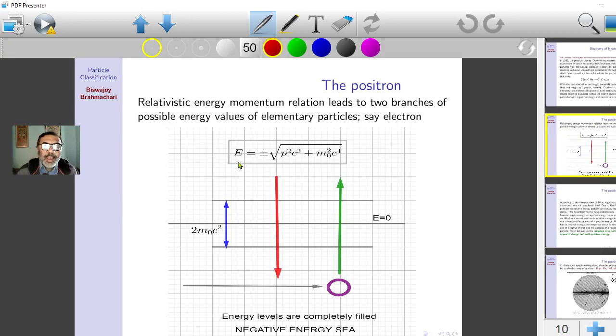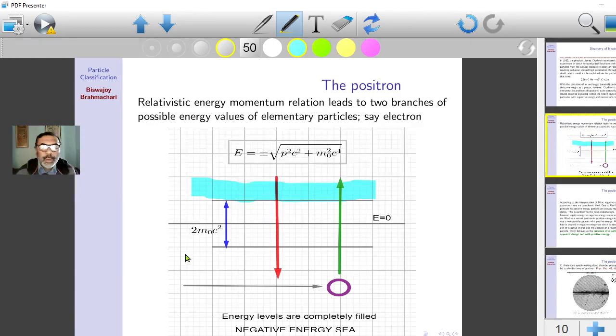According to Dirac, we have to take both signs, plus and minus. That means an elementary particle like electron can have positive energy, which is in this band, the blue band. And also it is possible for an elementary particle to have energy in this band, which is the negative energy band.